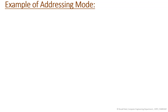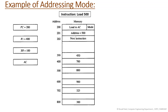Suppose the instruction is 'load 500' — we want to load something from that given location. This is your memory with addresses and their contents listed, along with some registers: the program counter, processor register, index register XR, and accumulator. This instruction takes two bytes stored at addresses 200 and 201. The program counter holds the address of the next instruction to be executed, which is load 500.